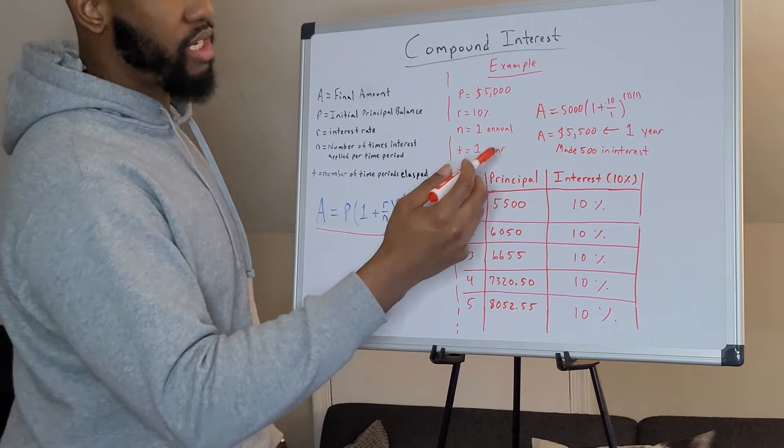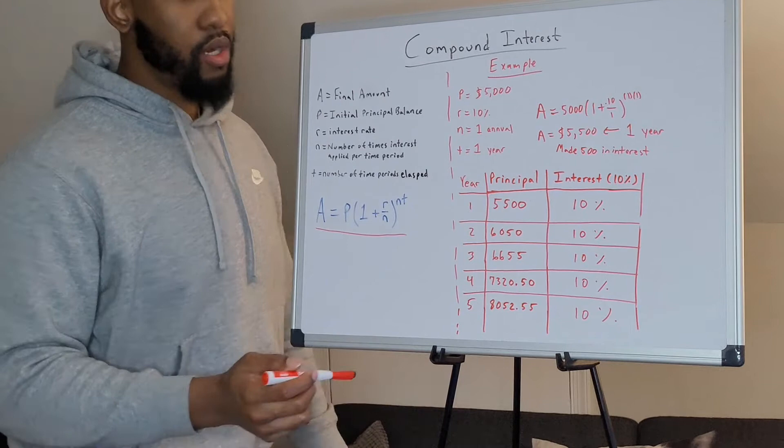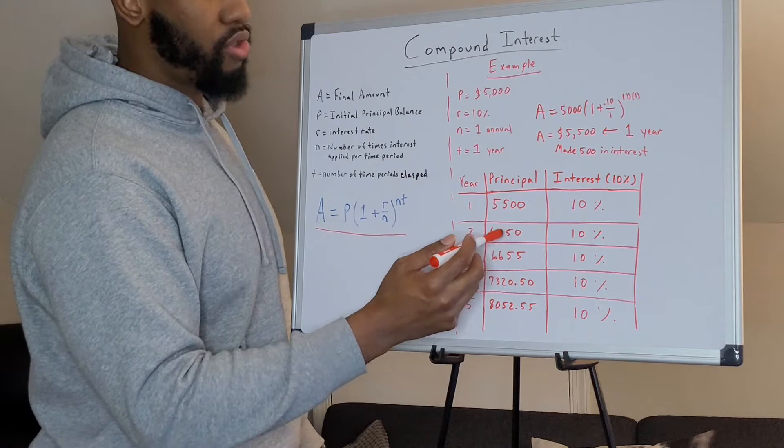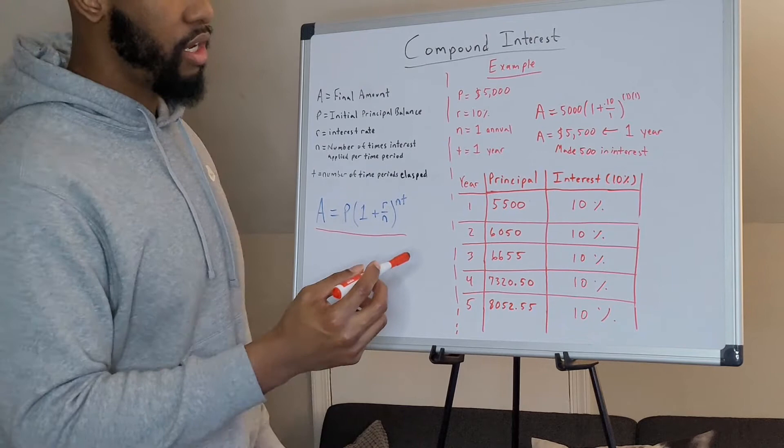So this is year one. Now let's look down here at the example of a five year period with an average of 10% interest. So after year one, you have $5,500. That $500 interest you made got reinvested back into the principal. So after year two, you're sitting at $6,050.